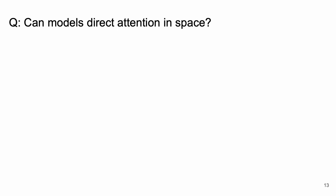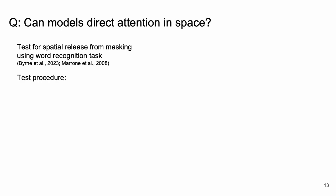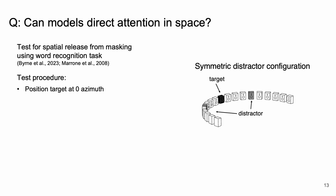Next we're going to ask if our models learn to direct attention in space. To do this we're going to test for spatial release from masking using the word recognition task. In this test we're going to position a target at the midline and azimuth and we're going to flank that target with distractors symmetrically on either side.